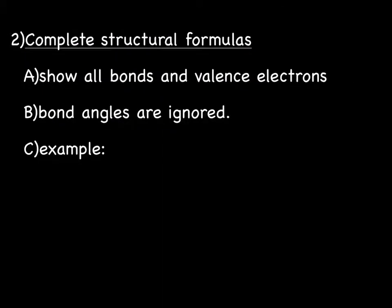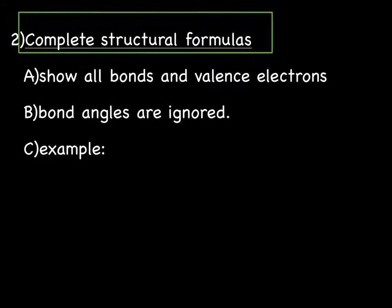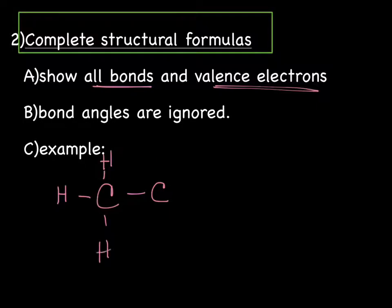The next type of formula is what's called the complete structural formula. The complete structural formula shows all of the bonds and all of the valence electrons. Bond angles are ignored. So a quick example of a complete structural formula would be something like C2H6. So there is a complete structural formula. It's really basically a Lewis dot structure.